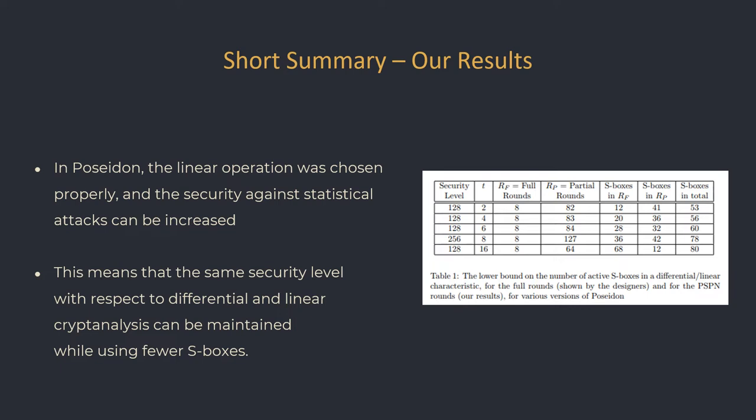For example, for the T equals 6 variant, the full rounds ensure only 28 active S-boxes, while the middle layer ensures 32. These results mean that the same level of security against this type of attacks can be achieved while using fewer full rounds, which can result in a significant speedup of the cipher.